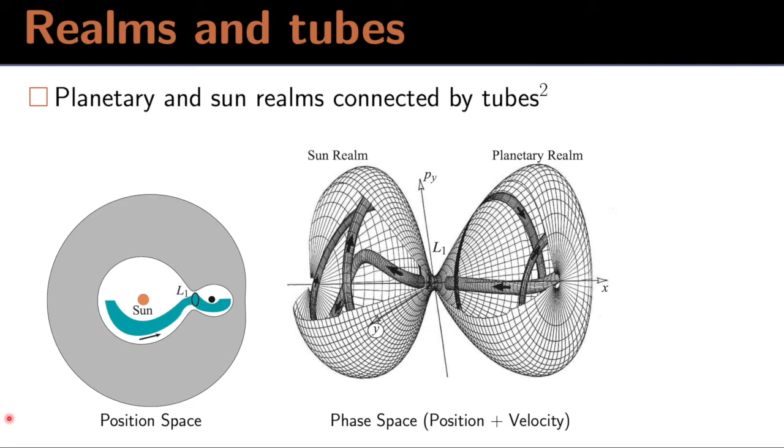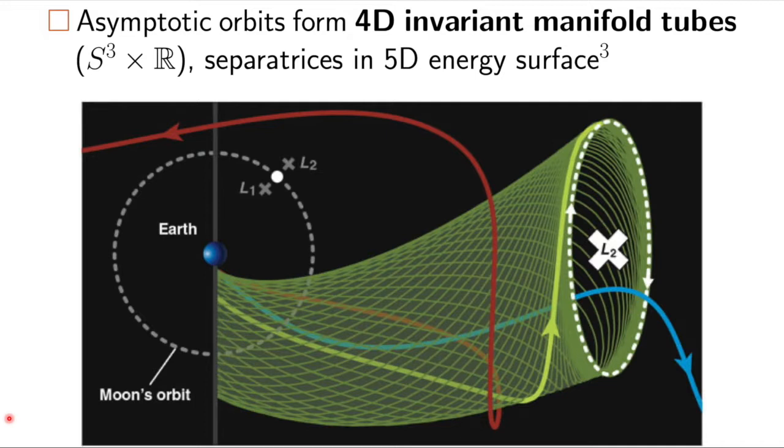with the tubes really are cylinders going from one side of a neck to another. In the full three-degree of freedom system, these tubes are actually four-dimensional, not just two-dimensional cylinders, but hypercylinders that are separatrices in the 5D energy surface, meaning they separate qualitatively different kinds of behavior, going through, bouncing back.